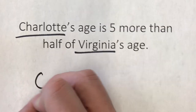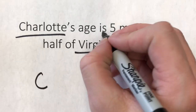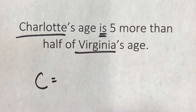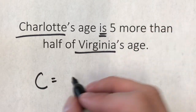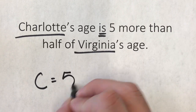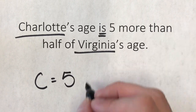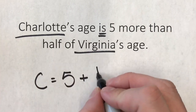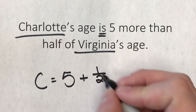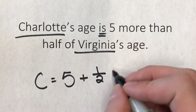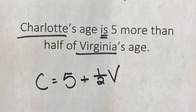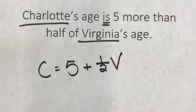I'm going to put C for Charlotte. 'Is' is going to be an equal sign. Five — 'five more than' means add. 'Half of Virginia' means half of Virginia. And we have ourselves a function rule.